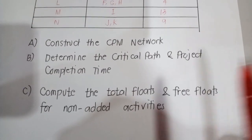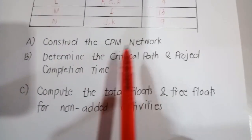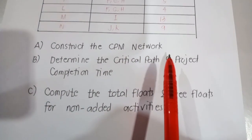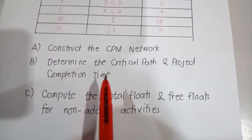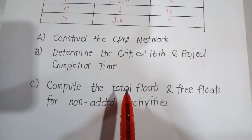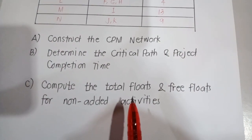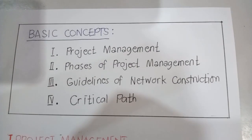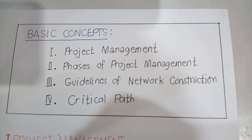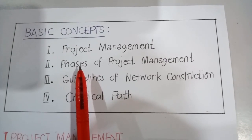Our goal here is to first construct the CPM network. Second, we need to determine the critical path and project completion time. And finally, we need to compute the total floats and free floats for non-critical activities. But before solving the problem, allow me to explain the basic concepts of critical path method.